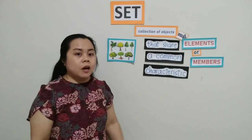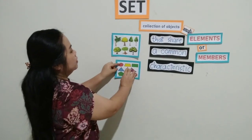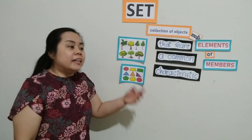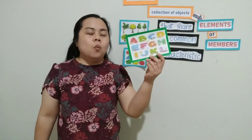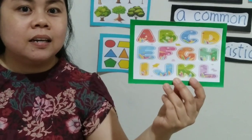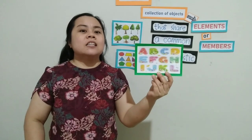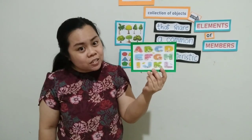Understand? Let's try another one. What is this? This is a set of shapes. Now let's see how far you've learned. What set is this? Yes, you're right. This is a set of letters. Good job.